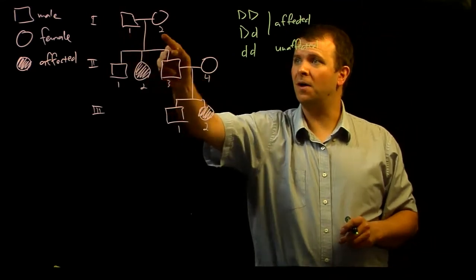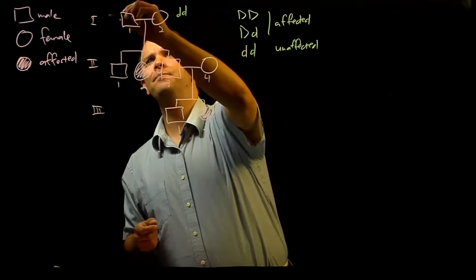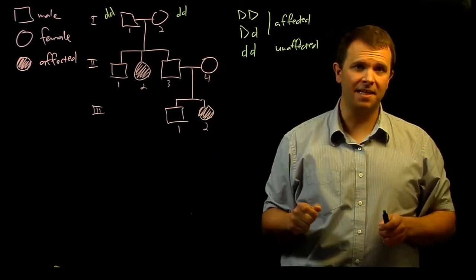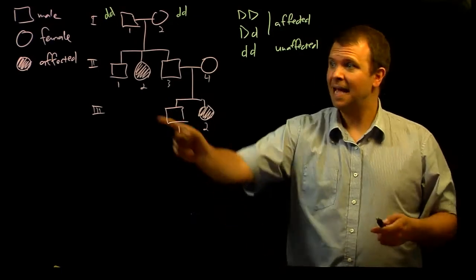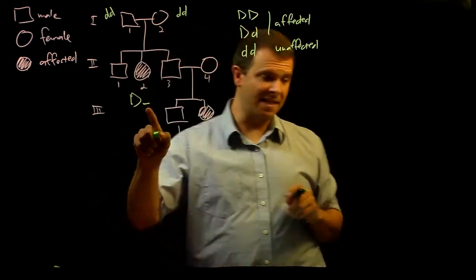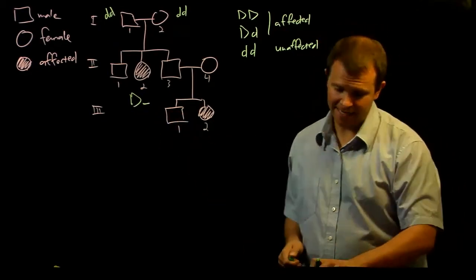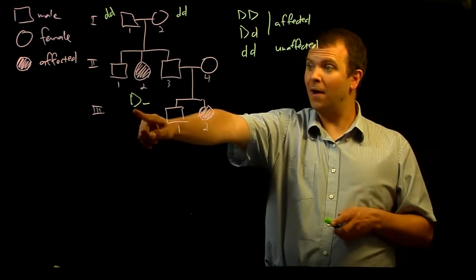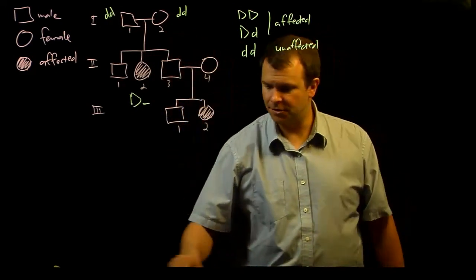Well, individuals I1 and I2 are both unaffected, so they must both have the genotype little d, little d, right? They must both be homozygous recessive, but they have an affected child. And so this child has to be big D, big D, or big D, little d, right? And if we don't know what the allele is, we just put an underline there to indicate that. And this isn't a possibility, because where would that big D allele have come from, right? It didn't come from either of those two parents.